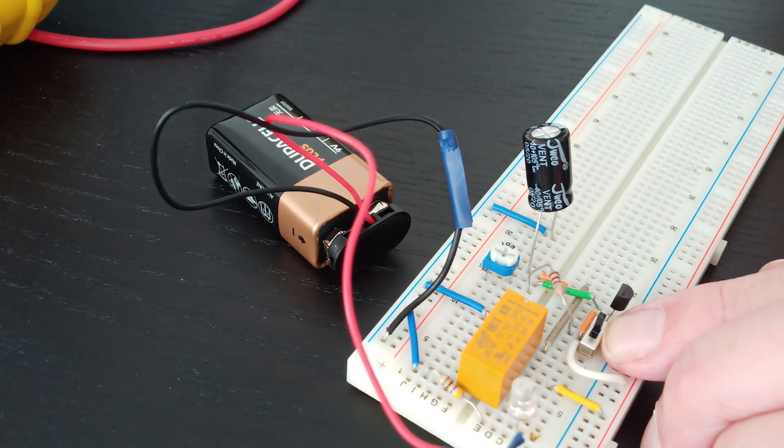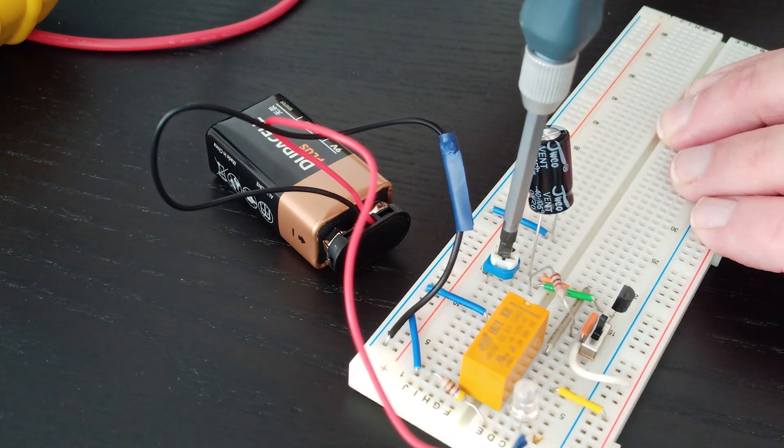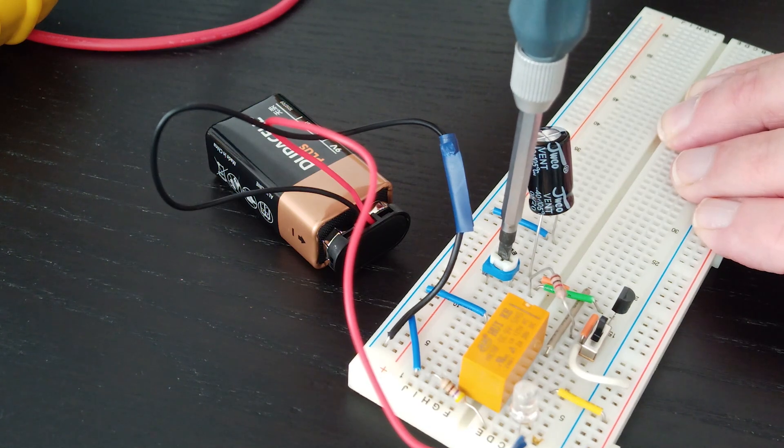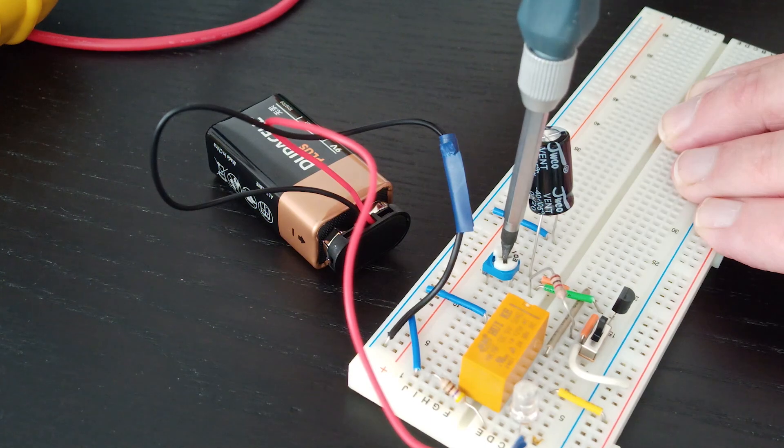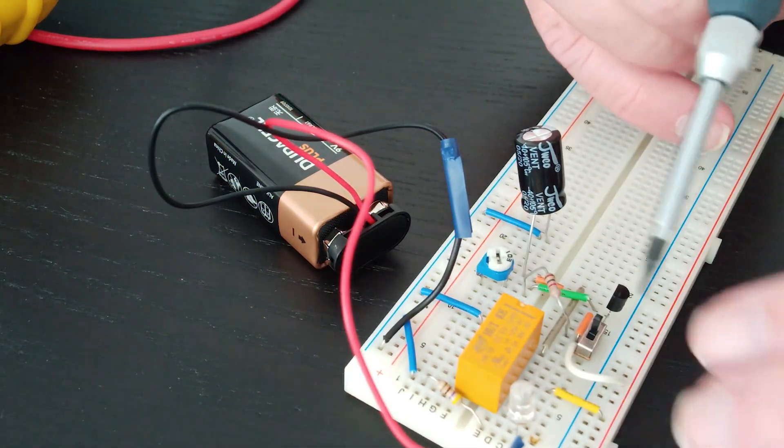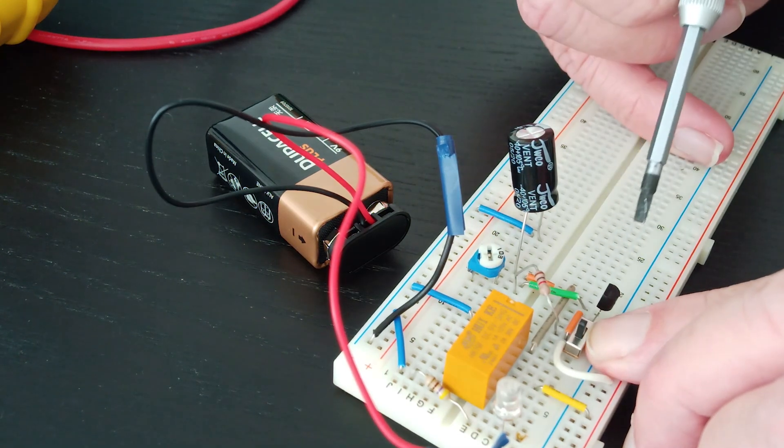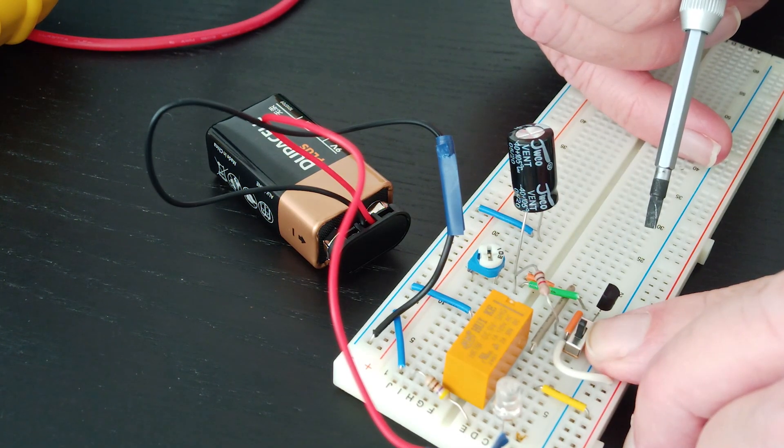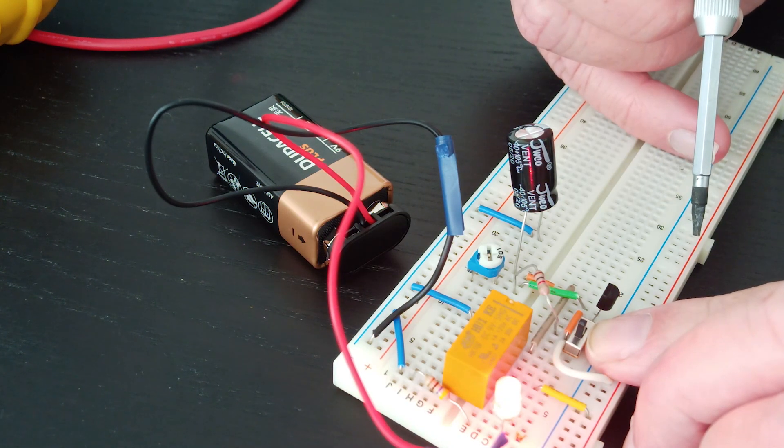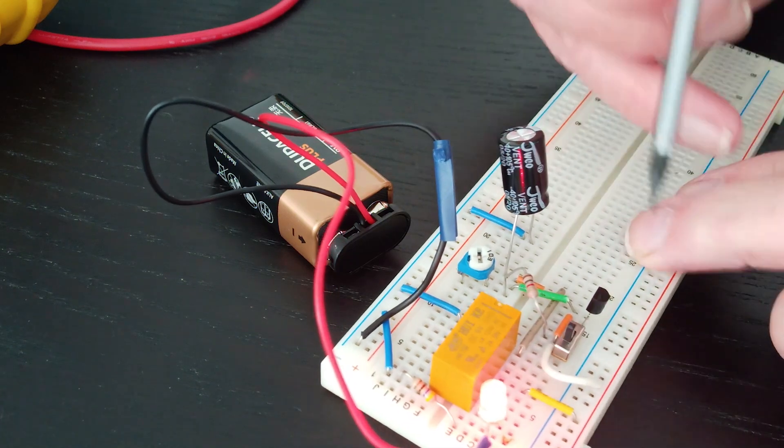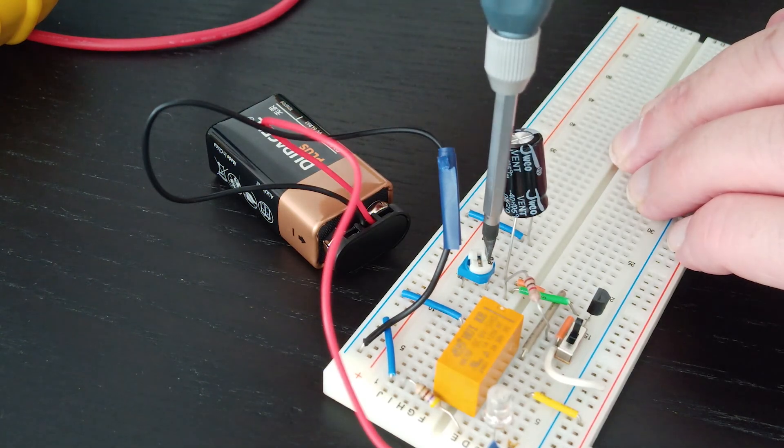But what I can do now is adjust this - these are also known as trim pots by the way because you use them to trim a circuit. So I can just turn it a little way around and that now should give us a longer delay. Let's see if that's worked. Yep, so as you saw we had several seconds more in that position.